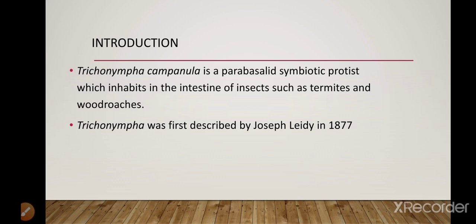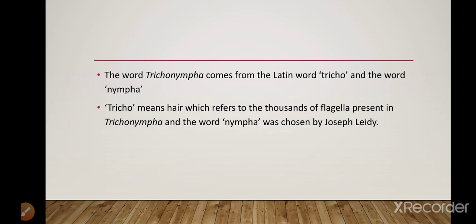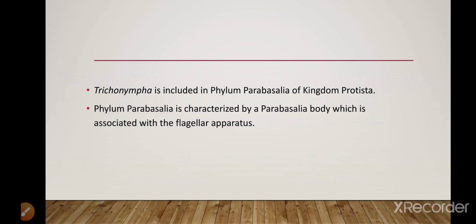Trichonympha was first described by Joseph Leidy in 1877. The word Trichonympha comes from the Latin words 'tricho' and 'nympha'. Tricho means hair, referring to the thousands of flagella present in Trichonympha. Trichonympha is included in phylum Parabasalia of kingdom Protista. Phylum Parabasalia is characterized by a parabasal body, which is a Golgi complex supported by a parabasal fiber, associated with the flagellar apparatus.